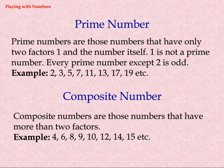Composite numbers are those numbers that have more than 2 factors. Examples: 4, 6, 8, 9, 10, 12, 14, 15, etc.